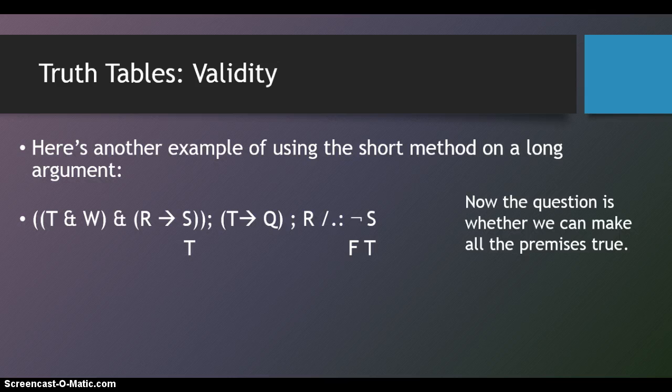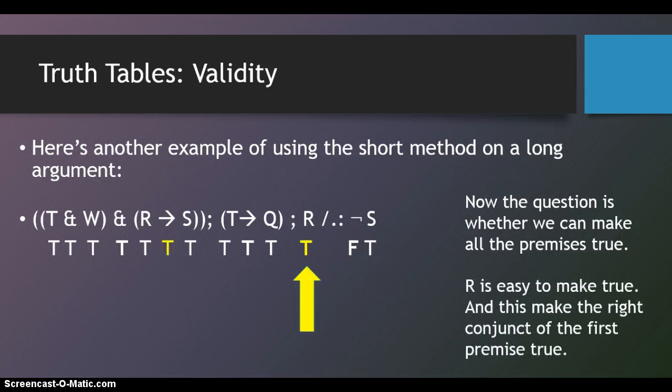Now, the question is whether we can make all the premises true. R is easy to make true. It stands alone. It's a simple claim. There's nothing in the conclusion that would constrain us to force it to be true or false. So, we can stipulate that R is true. And then, of course, if R is true in that premise, it's also true anywhere else we find it on that row. In this case, also in the first premise. And that makes the right conjunct of that first premise true. We know that S is true. We now know that R is true, or that we're stipulating that R is true. That makes if R then S true.